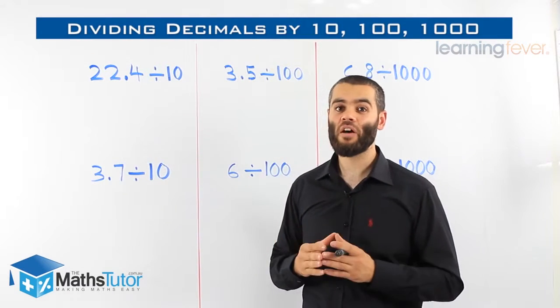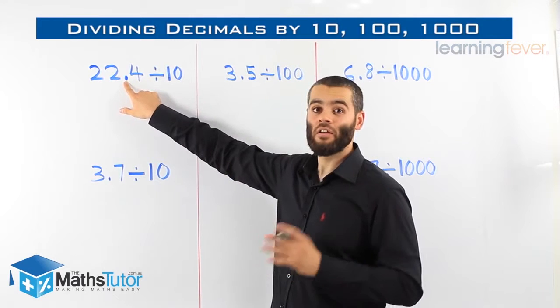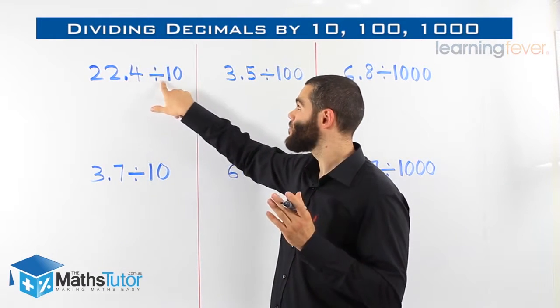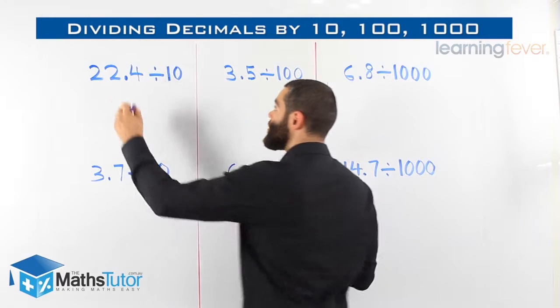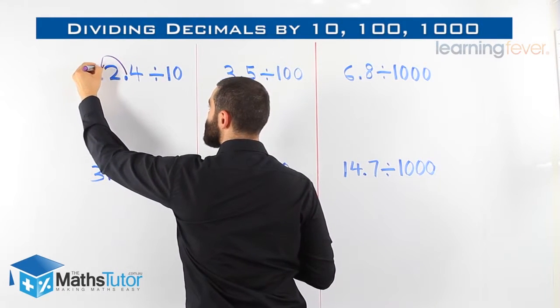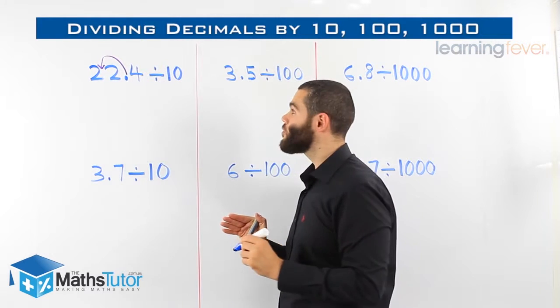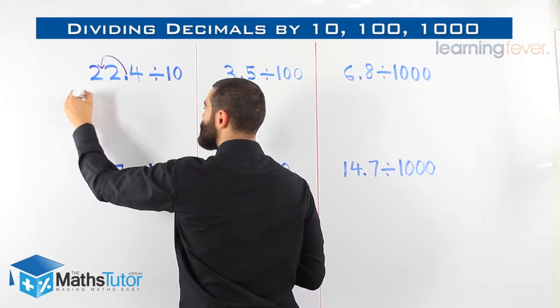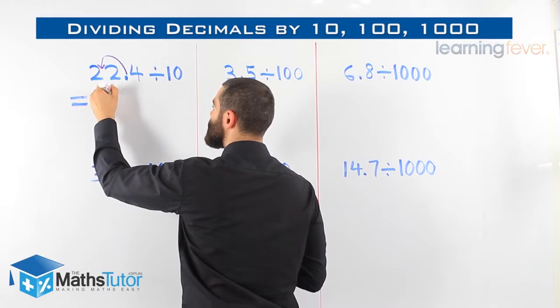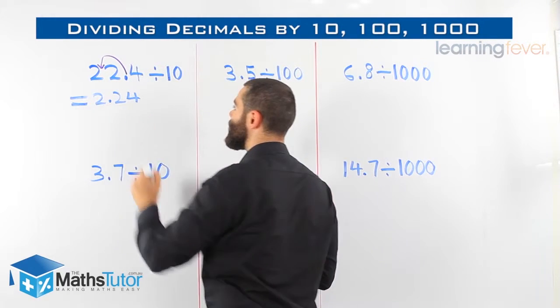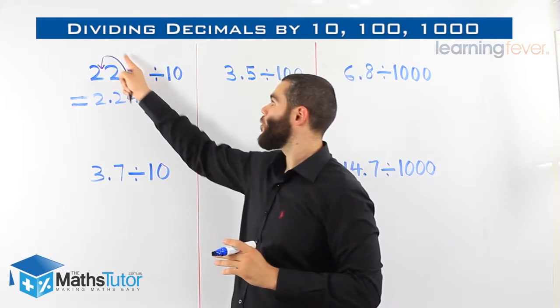22.4 divided by ten. We grab our point and we say, you don't belong here. We're going to move you to the left. How many times? Because we're dividing by ten, ten has one zero, we're moving you once to the left. So we grab and we move it once to the left. The point is going to be between the two and the other two, so it will be 2.24. 22.4 divided by ten will be 2.24, so we move it once to the left.